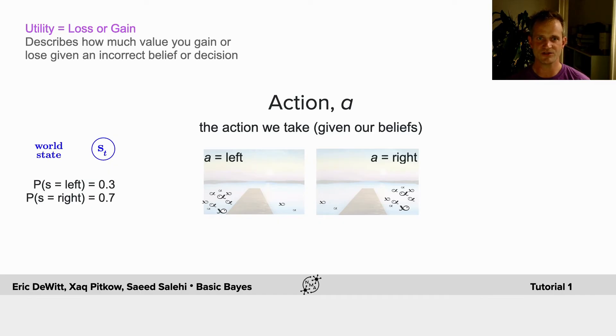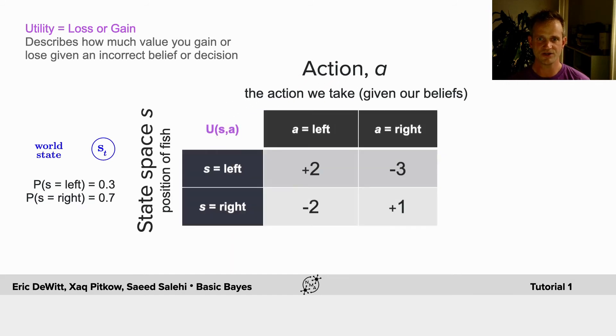and this is all based on our beliefs or the probabilities of where we think the fish are. So, what we will end up with is a utility function that's defined by the states where the fish actually are, left or right, and where we decide to fish, left or right.